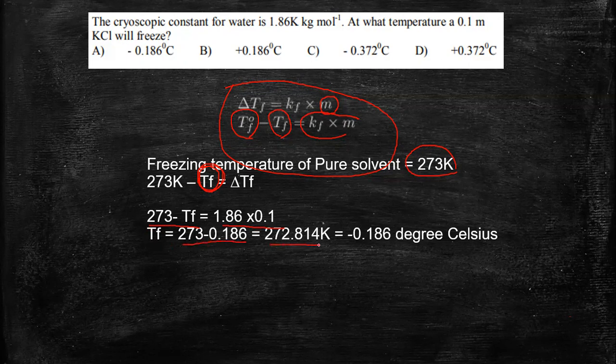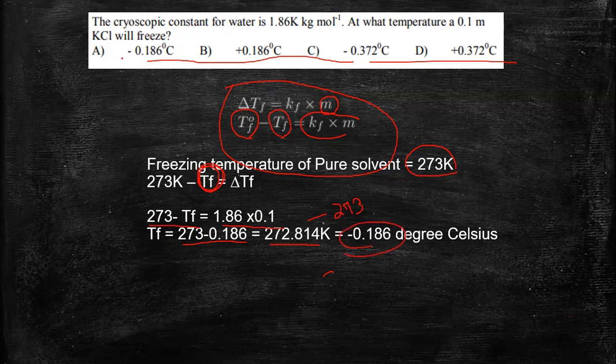But if you look carefully over here, your answer should be in degree Celsius. So to make it into degree Celsius, what we do, we just minus this by 273. So 273 minus 273 gives you minus 0.186 degree Celsius, which is option A.